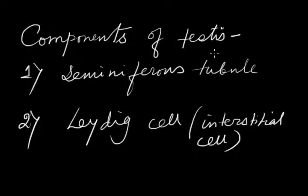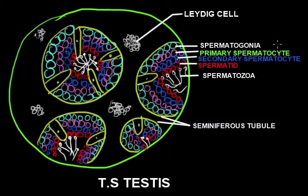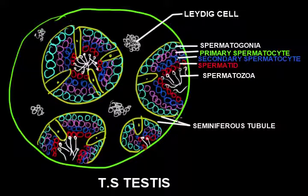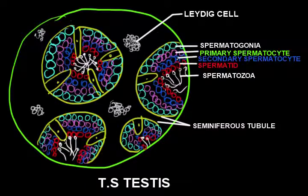The components of testes: testes are basically composed of the seminiferous tubule and the Leydig cells — these are the basic structural components. This is the transverse section of testes, from which you may get a detailed knowledge of testes. These round-shaped structures are actually seminiferous tubules, and in between the space of the seminiferous tubules there is a cluster of cells called Leydig cells. These are the two basic components of testes.